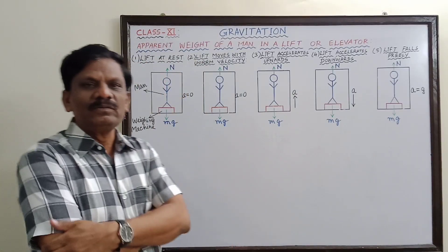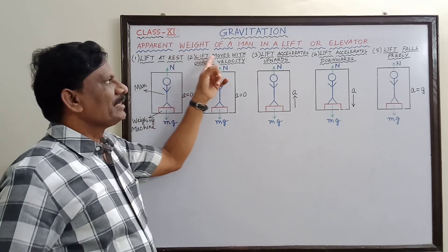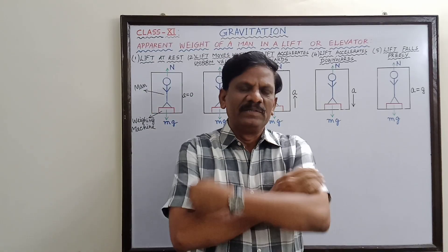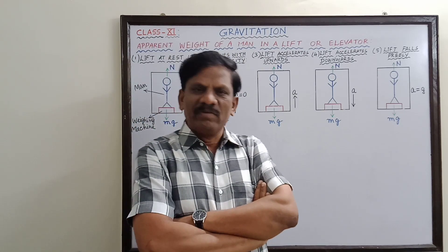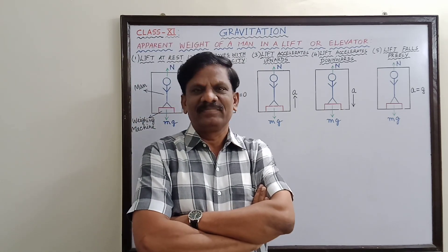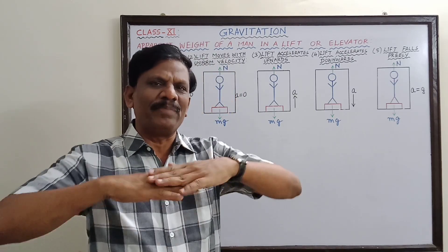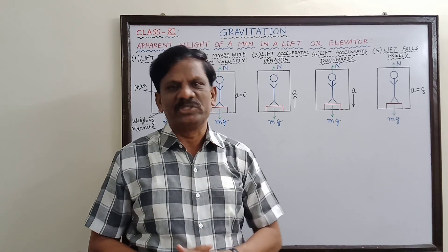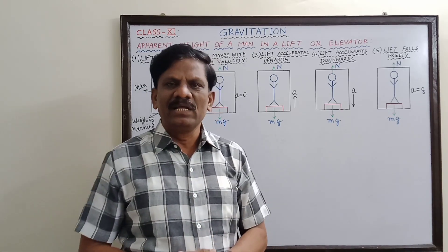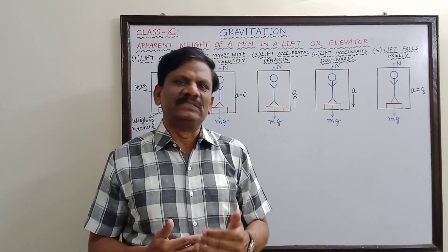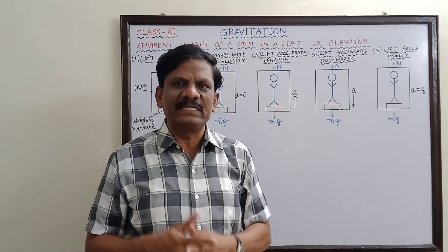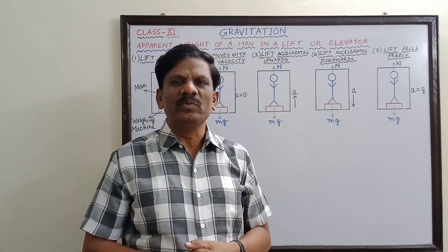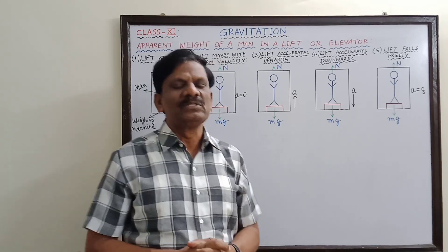Today we are going to discuss the topic: apparent weight of a man in a lift or elevator. How do you find your weight? In everyday experience, we find our weight by standing on a weighing machine. When you stand on the weighing pan, you exert your total weight — equal to the gravitational force — on the machine. This force is called the action force. As a reaction, the weighing machine exerts a normal force in the upward direction.